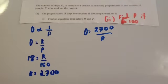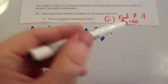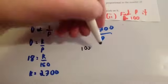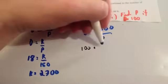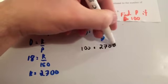So, it says, find the number of people needed. So, find P if D equals 100. So, D equals, sorry, 100 equals 2,700 divided by P.